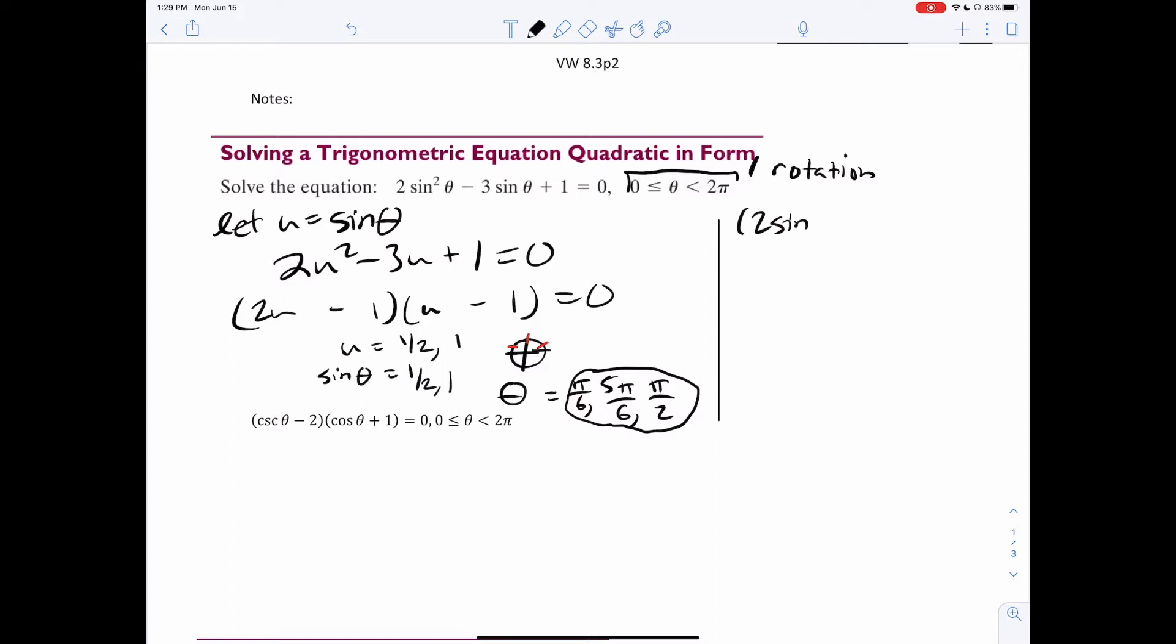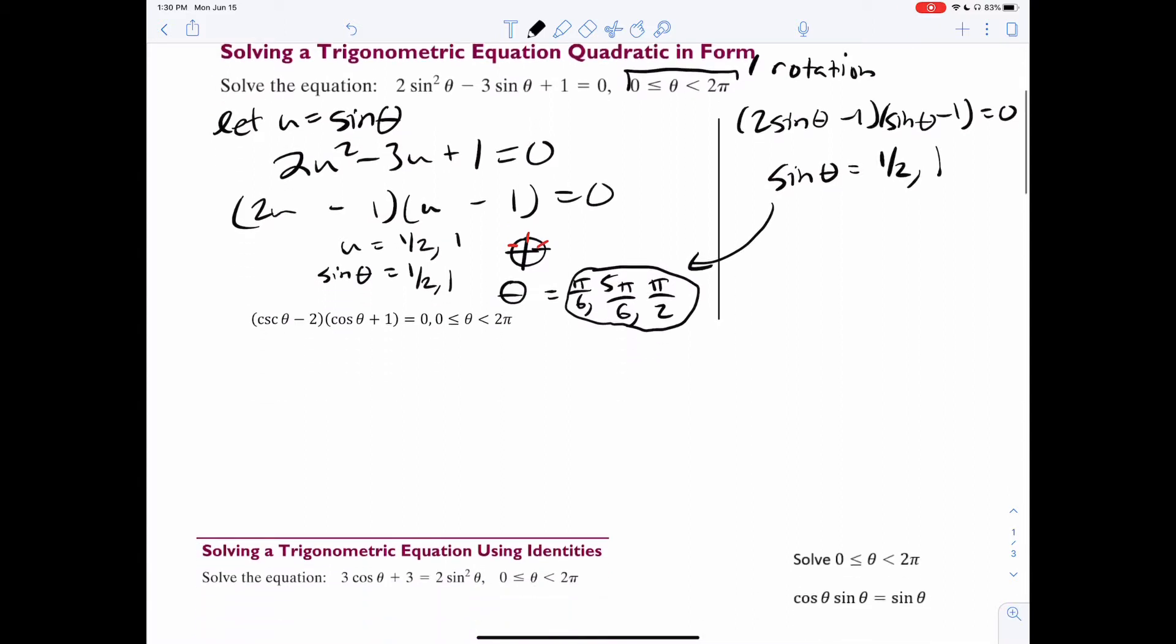So some people just do this. 2 sine theta minus 1, sine theta minus 1. And notice how you get the exact same thing. It's just a little bit faster. You can do this too. Let's go to our next example.